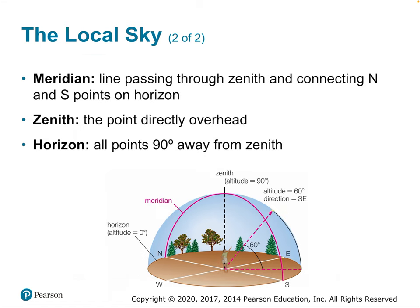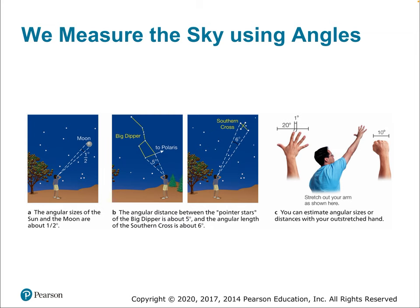To summarize local sky terms: the meridian is the line passing through the zenith connecting north and south points on the horizon; the zenith is the point directly overhead; and the horizon is all points 90 degrees away from the zenith.